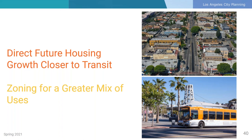Plan policies promote development around transit that mixes residential and neighborhood-serving commercial uses and jobs, providing options for current and future residents to more easily access housing, jobs, school, or run errands without relying on a personal vehicle. Plan policies also establish objectives for improving streets for pedestrians and bicyclists and reorganizing streets for safety, and explore ways to connect neighborhoods divided by freeways through pedestrian improvements such as lighting and landscaping under freeway underpasses.